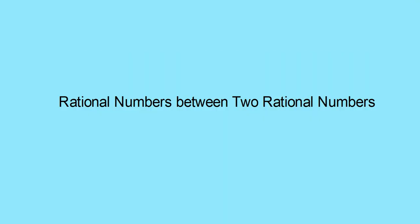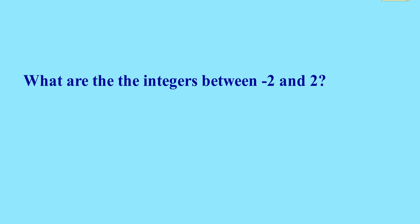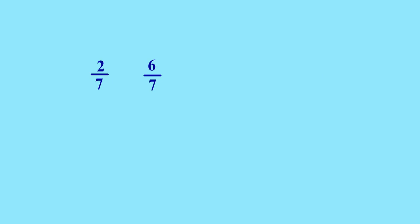Now let us discuss rational numbers between two rational numbers. What are the natural numbers between 1 and 5? They are 2, 3, and 4. Similarly, the integers between negative 2 and 2 are negative 1, 0, and 1. In the same way, we can find rational numbers between any two rational numbers. Let me take two rational numbers: 2 by 7 and 6 by 7.